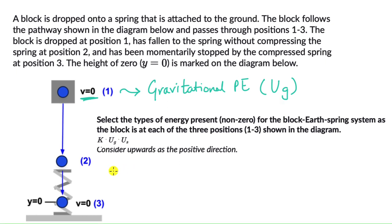Alright, at position 2, the block is moving and it also has some height. So height of zero, that is marked over here. That is when the spring is completely compressed. So there is some height to it. There is also some velocity. So there is kinetic energy and there is also some gravitational potential energy at this point.